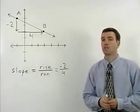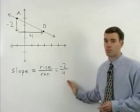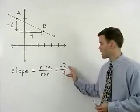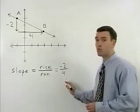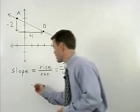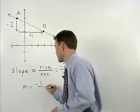As a last step to these problems, make sure you've reduced your slope as much as possible. And notice that negative two over four can be reduced to negative one half. So M equals negative one half.